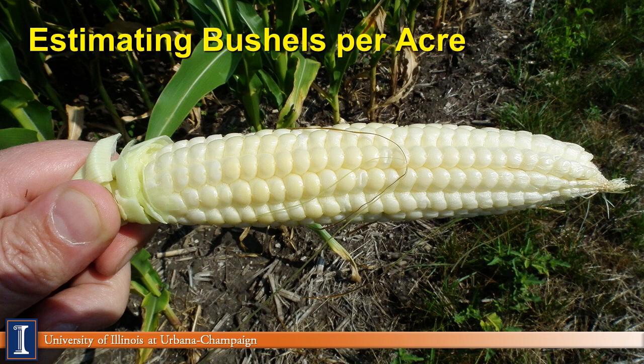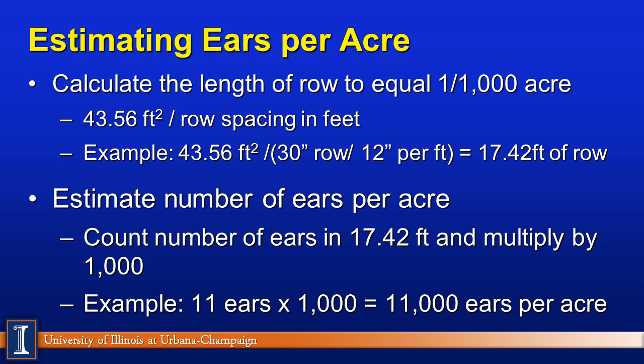So if we've got this corn, how are we going to estimate what we really have in terms of bushels per acre? This is a fairly complicated-appearing calculation, but actually quite easy. We're going to calculate the length of a row to equal 1/1000th of an acre, which is 43.56 square feet divided by row spacing in feet. For 36-inch rows, that's 3 feet, and dividing 43.56 by 3 gives you approximately 17. So that becomes an important calculation based on your row spacing in the field.